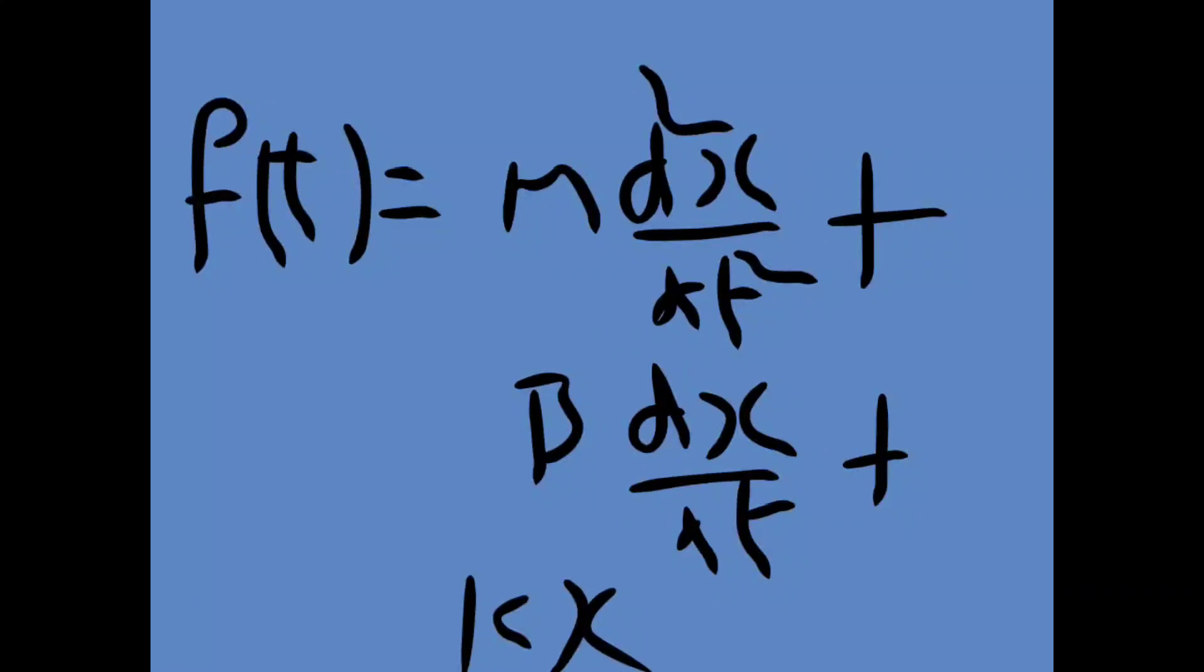Now we can substitute all Fm, Fb, Fk values into the equation. Now we apply Laplace transform on both sides. Laplace transform of f(t) gives F(s).